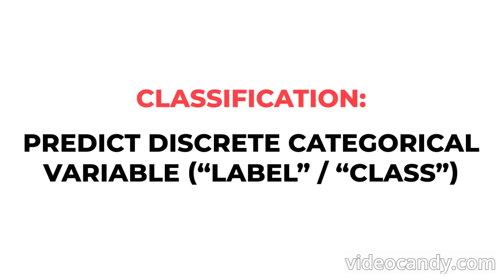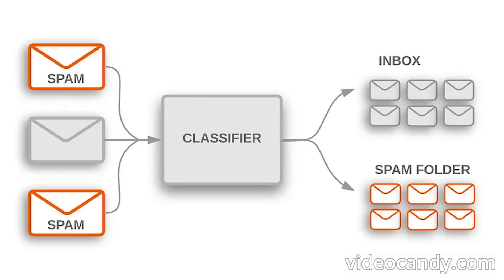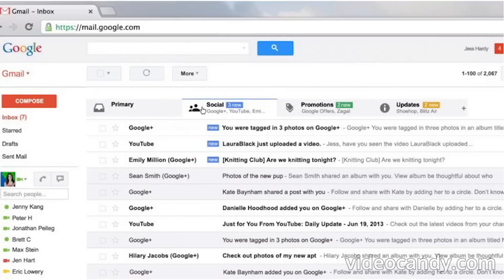In classification, we try to assign a discrete categorical label, also called a class, to a data point. For example, we may want to assign the label spam or no spam to an email based on its content, sender, and so on. But we could also have more than two classes, for example, junk, primary, social, promotions, and updates, as Gmail does by default.